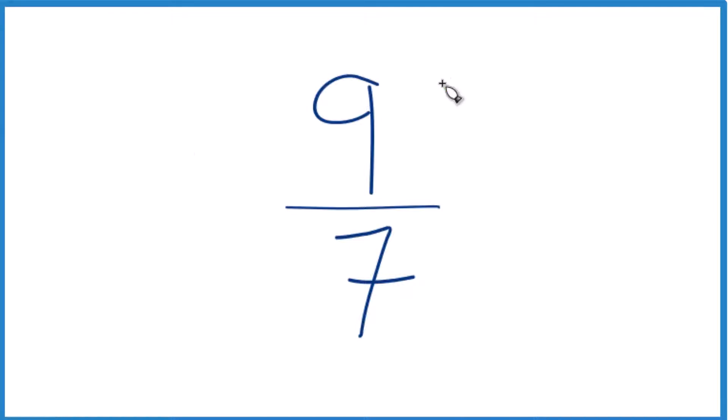All right, let's write nine-sevenths, the fraction nine-sevenths, as a mixed number. Right now it's an improper fraction because the numerator, that's bigger than the denominator. But we want to write this as a mixed number.